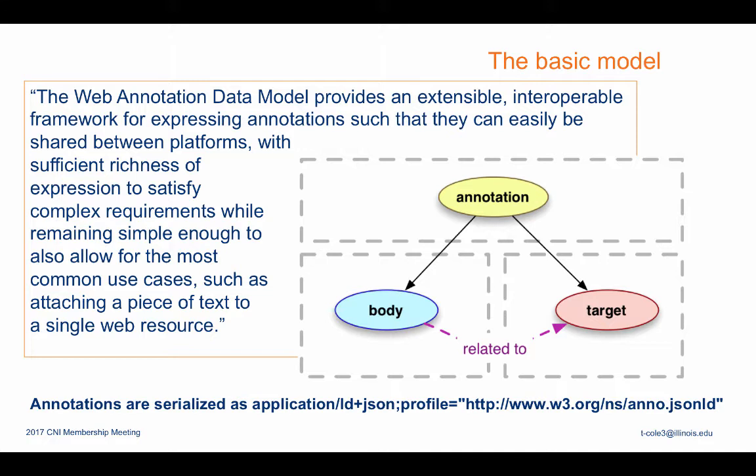Third, annotations have a structure, so they can't really be captured as a simple URI. Instead, the data model specifies serializing annotations in JSON-LD, the Linked Data version of JavaScript Object Notation. A brief anecdote about this: the Web Annotation Working Group Charter was presented to the W3C Advisory Committee in April 2014. The AC is composed of a rep from every W3C member. During the Q&A, someone from the audience volunteered that they knew of the perfect scheme for defining annotation targets — similar to how fragment identifiers work, using double hash marks instead of a single hash mark.